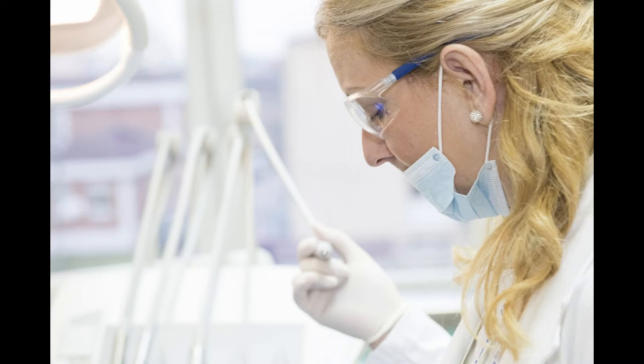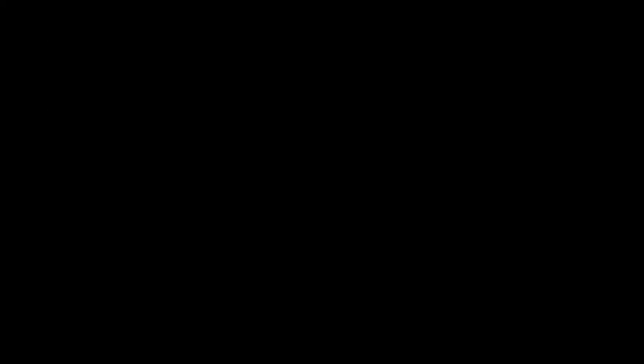Public health is also inclusive of efforts ordinary citizens do. For example, if a union is striking for safer conditions for its employees, as well as in the case of a hospital, lower staff-to-patient ratios — instead of one nurse to eight patients, say one nurse to four patients. This is an example of how grassroots organizing can help improve the quality of life of a wide net of individuals through the collective efforts of a motivated group or population.